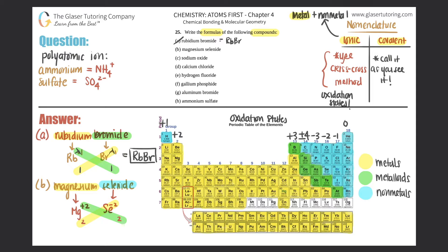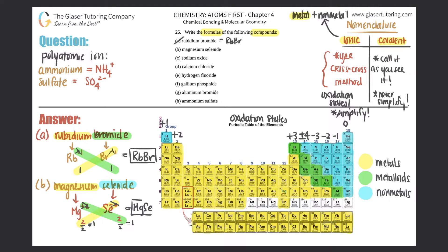The +2 crisscrosses telling me I need two seleniums; the -2 crisscrosses telling me I need two magnesiums. The charges cancel. Now for ionic compounds, you always simplify — that's a difference from covalent, where you never simplify. Two and two: divide both by two and you get 1 and 1. So this would be MgSe, and part (b) is done.